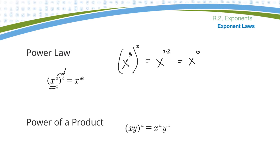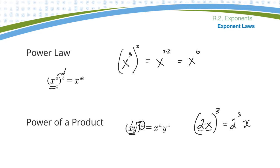If I have a power of a product — so I have a product in the brackets — and I'm raising that to a power, I need to raise each thing inside to that exponent. Say I have two x, all to the third. I have two factors inside, so each one needs to get raised to the third power. So it would be two to the third and x to the third. Two to the third comes out to eight, so that would be simplified to eight x cubed.